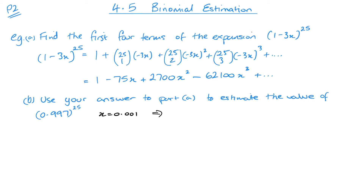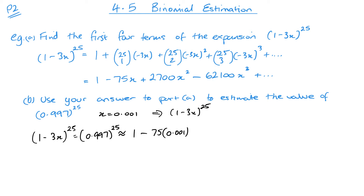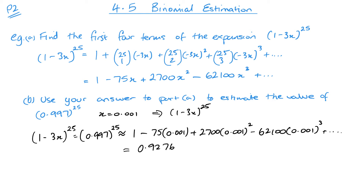We substitute x = 0.001 into our expansion of (1 − 3x)^25. So 0.997^25 is approximately 1 − 75(0.001) + 2700(0.001)² − 62100(0.001)³. This expansion could go on forever, but each additional term adds such a small number that it becomes less important. This gives approximately 0.9276379.